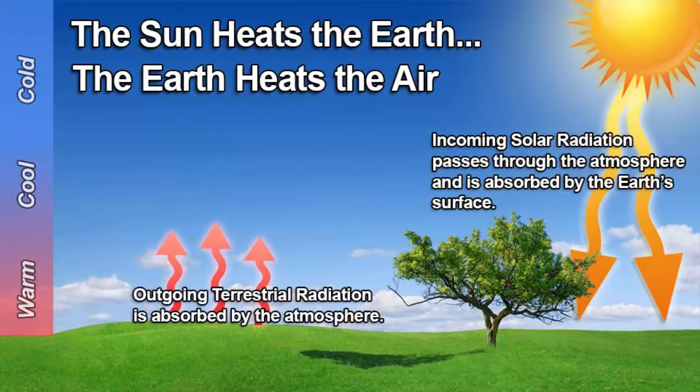The first thing we need to talk about when discussing the Sun and its relationship to weather is exactly the role that the Sun plays. The Sun is this huge mass of energy and it's constantly emitting that energy out into space. Some of that energy actually reaches the Earth through a transport means known as radiation. There's something important you need to understand about incoming solar radiation from the Sun.